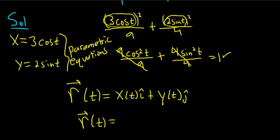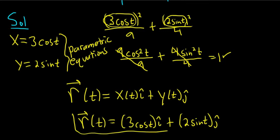And then so x is 3 cosine t, so this is 3 cosine t i-hat, plus, and then we have 2 sine t j-hat. And that's it. That's our vector-valued function.